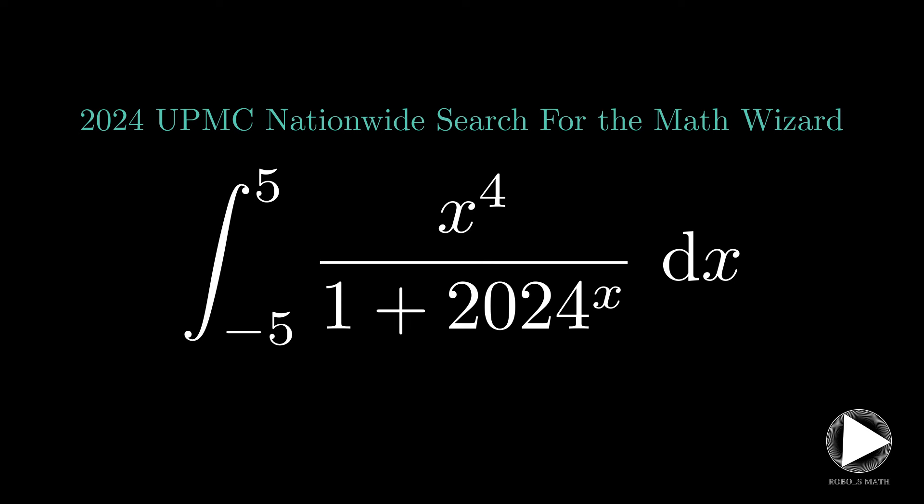The limits of integration are in the form negative k to k, which should give us the idea to check first whether the integrand is an odd or even function. Unfortunately, the integrand is neither odd nor even, so this trick just wouldn't work.